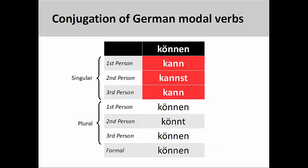Finally, the stem vowel in the modal verb können changes from ö to a in the singular, but goes back to ö in the plural.